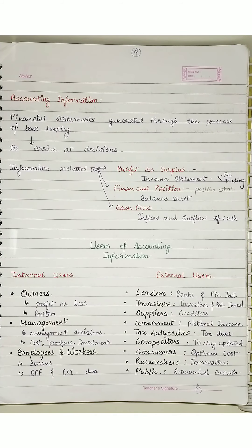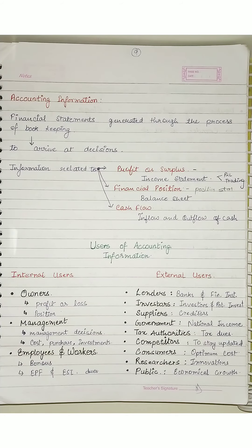Now next — who are the external users? External users are our lenders. Who lends to us? Any bank or financial institute. If they lend us any amount, give us loans, then they also have the responsibility to know how the company or entity is working — because the safety and recovery of loans and advances they have given us is important to them. How will they know our repaying capacity? All that will be known from accounting information that comes from our financial statements.